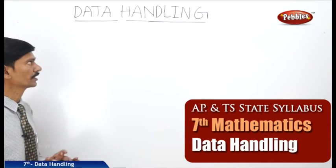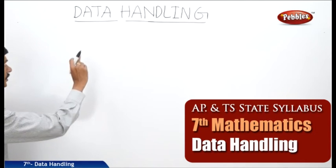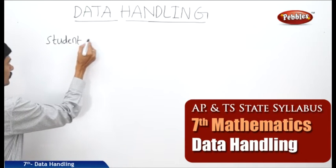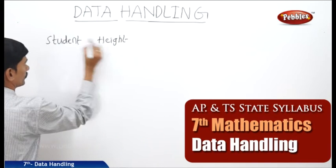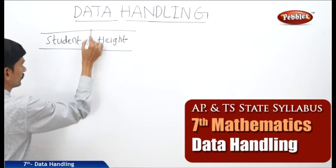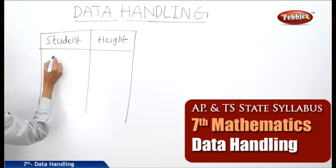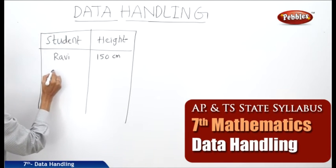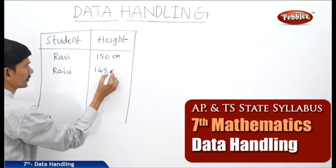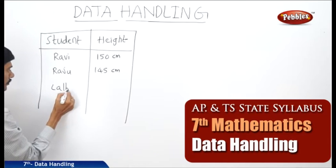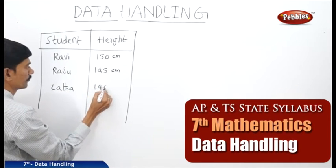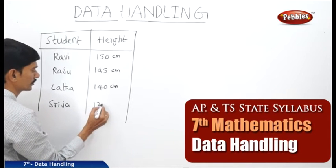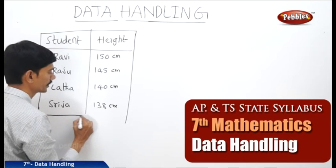Now let us see the next chapter: data handling. So what is the data? Now let us see the information collected from the students. I will take the heights of the students in a table. For example, the height of Ravi is 150 centimeters, the height of Raju is 145 centimeters, the height of Lata is 140 centimeters, and the height of Sreeja is 138 centimeters.